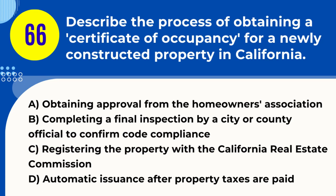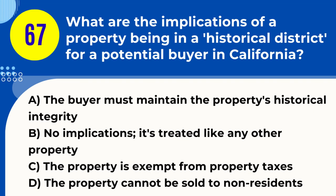Question 66. Describe the process of obtaining a certificate of occupancy for a newly constructed property in California. A. Obtaining approval from the homeowners association. B. Completing a final inspection by a city or county official to confirm code compliance. C. Registering the property with the California Real Estate Commission. D. Automatic issuance after property taxes are paid. Answer: B. Explanation. To obtain a certificate of occupancy for a newly constructed property in California, the property must undergo a final inspection by a city or county official. This inspection confirms that the property complies with building codes, zoning laws, and other regulations. Once it passes, the certificate is issued indicating the property is suitable for occupancy.